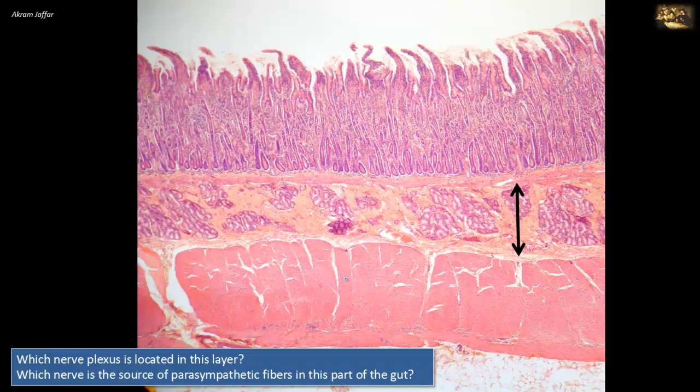Which nerve plexus is located in this layer? Which nerve is the source of the parasympathetic fibers in this part of the gut?